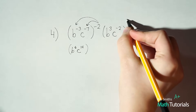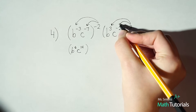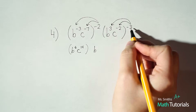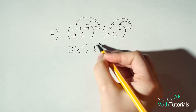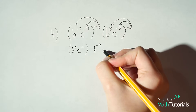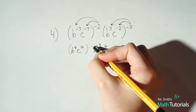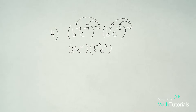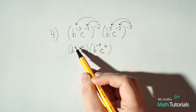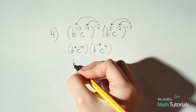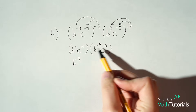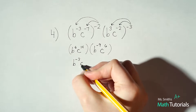We've simplified the first section. Now distribute this negative 3 throughout the second side as well. b to the 3rd brought to the power of negative 3: this time it's a positive 3 times a negative 3, so it's negative 9. c to the negative 2 brought to the power of negative 3: negative times a negative is positive 6. So now I multiply: b to the 6th times b to the negative 9th — when multiplying we add exponents — 6 plus negative 9 is negative 3. c to the 14th times c to the 6th: 14 plus 6 is positive 20.